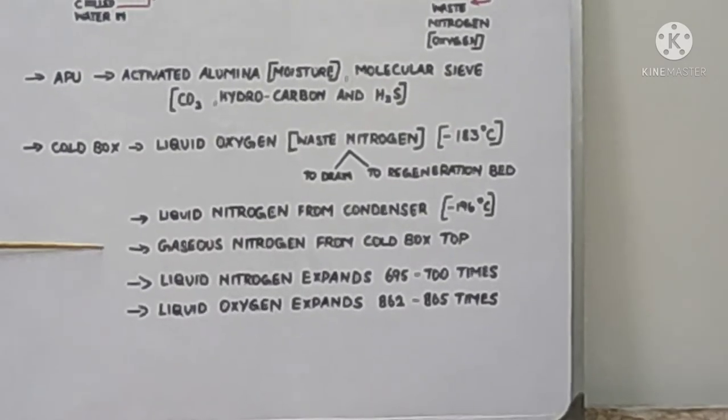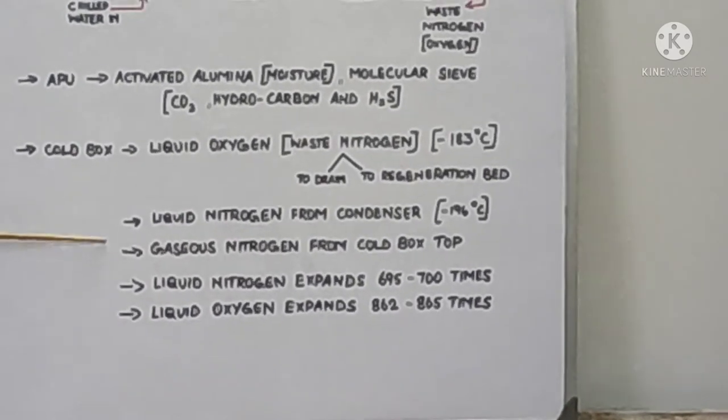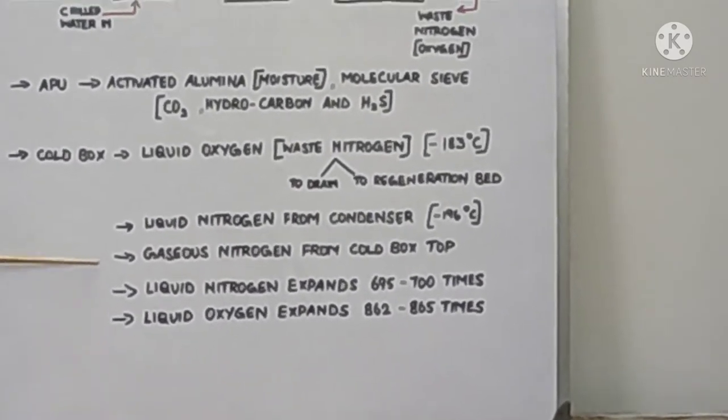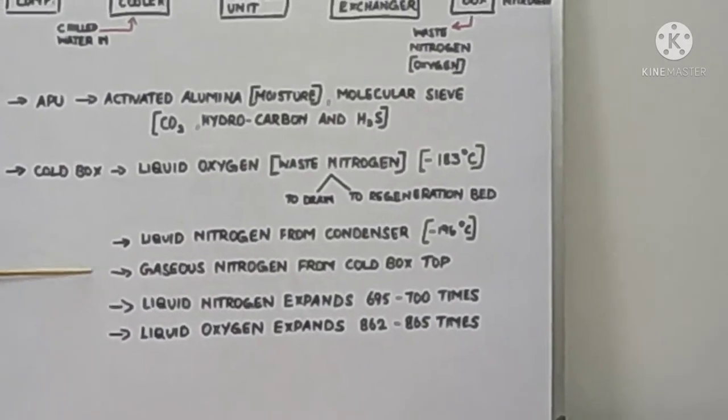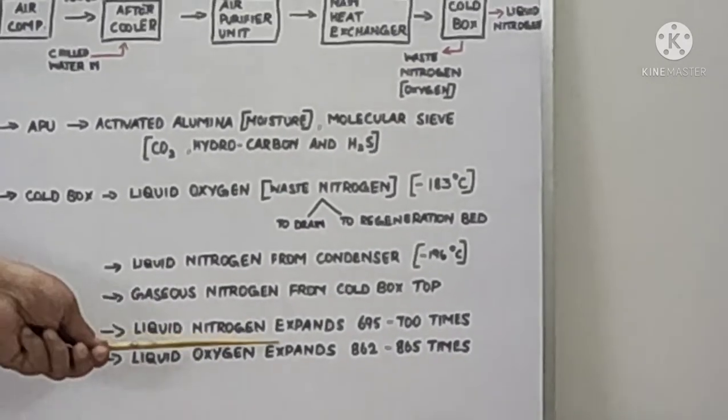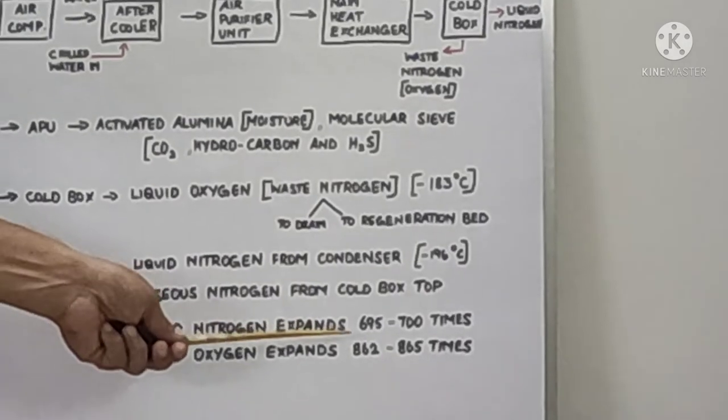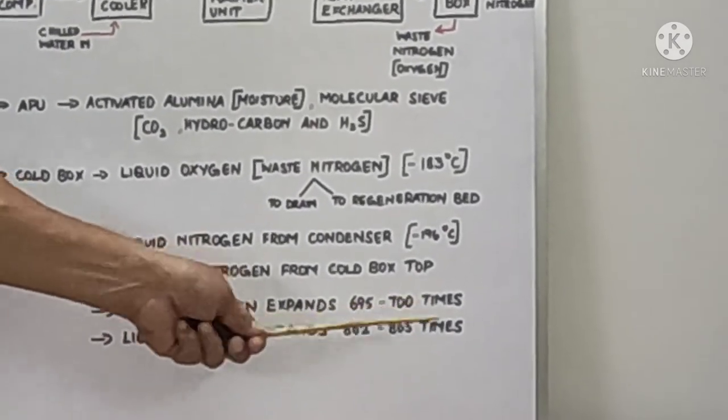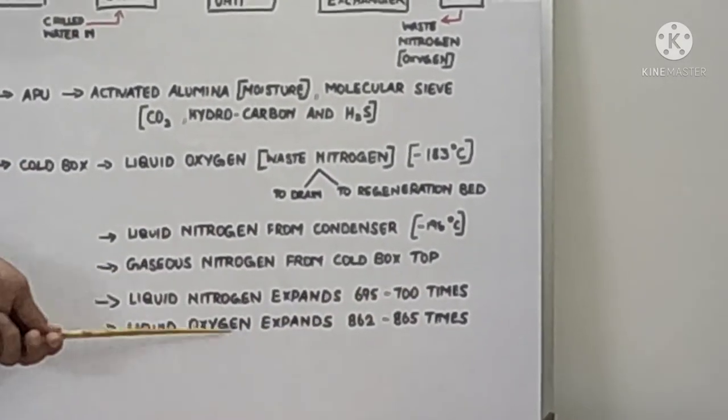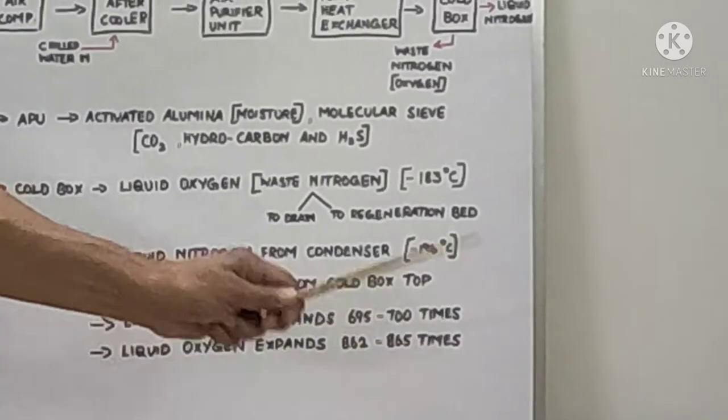This type of plant will be used in mixing with natural gas to reduce the calorific value. Liquid nitrogen, when you expand, will boost around 700 times to gaseous. Similarly, oxygen will expand around 865 times.